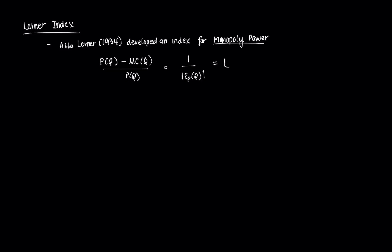It's a measure of a firm's monopoly power in terms of the extent to which the profit-maximizing price — the price the firm chooses to set — would exceed marginal cost. In general, of course, since it's a monopoly, the price should exceed marginal cost. This term here — PQ minus MCQ all over PQ — is what we refer to as a firm's markup.